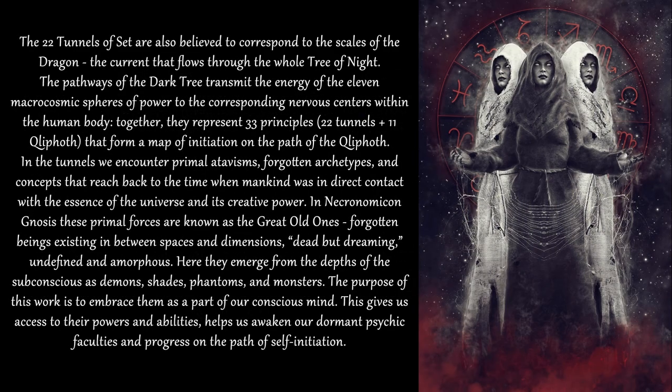The 22 Tunnels of Set are also believed to correspond to the scales of the Dragon, the current that flows through the whole Tree of Night. The pathways of the Dark Tree transmit the energy of the 11 macrocosmic spheres of power to the corresponding nervous centers within the human body. Together, they represent 33 principles — 22 tunnels plus 11 Qliphoth — that form a map of initiation on the path of the Qliphoth. In the tunnels, we encounter primal atavisms, forgotten archetypes and concepts that reach back to the time when mankind was in direct contact with the essence of the universe and its creative power.